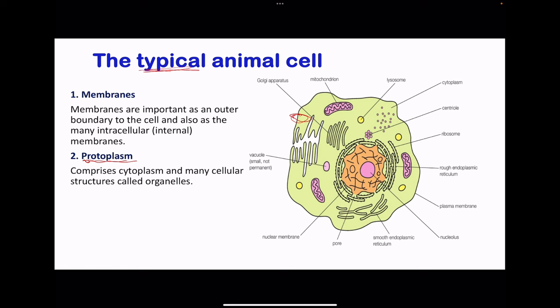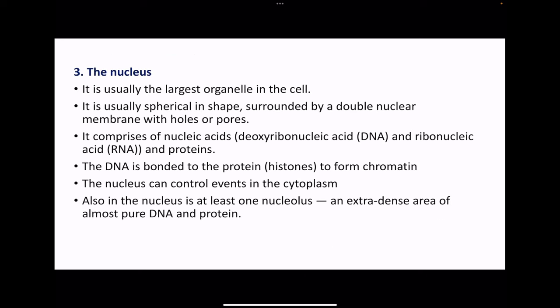The nucleus is usually the largest organelle in the cell. It's usually spherical in shape and surrounded by a double nuclear membrane with pores or nuclear holes, through which certain substances that have to enter or exit the nucleus must pass. Inside the nucleus there is DNA, RNA, as well as some proteins, some of which are enzymes. DNA is bound onto proteins called histones, and this forms chromatin. Because the nucleus contains DNA, it controls everything that takes place within the specific cell. In the nucleus, there is at least one nucleolus, which is a dense area of almost pure DNA and protein.